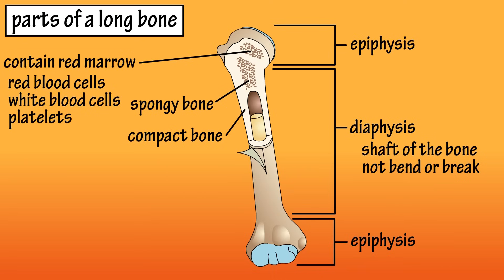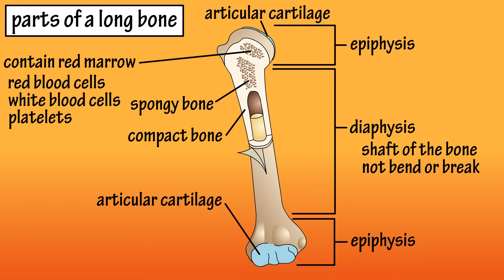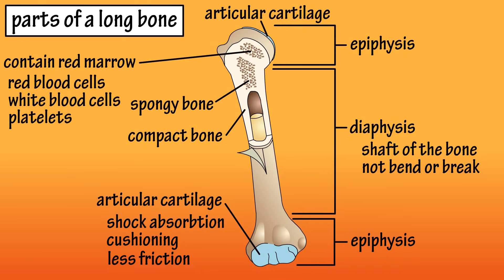Where bones come together to form joints is a smooth tissue called articular cartilage. It provides shock absorption, cushioning, and minimizes friction as bones move. Because articular cartilage has a poor blood supply, it does not heal very well once it has been damaged.